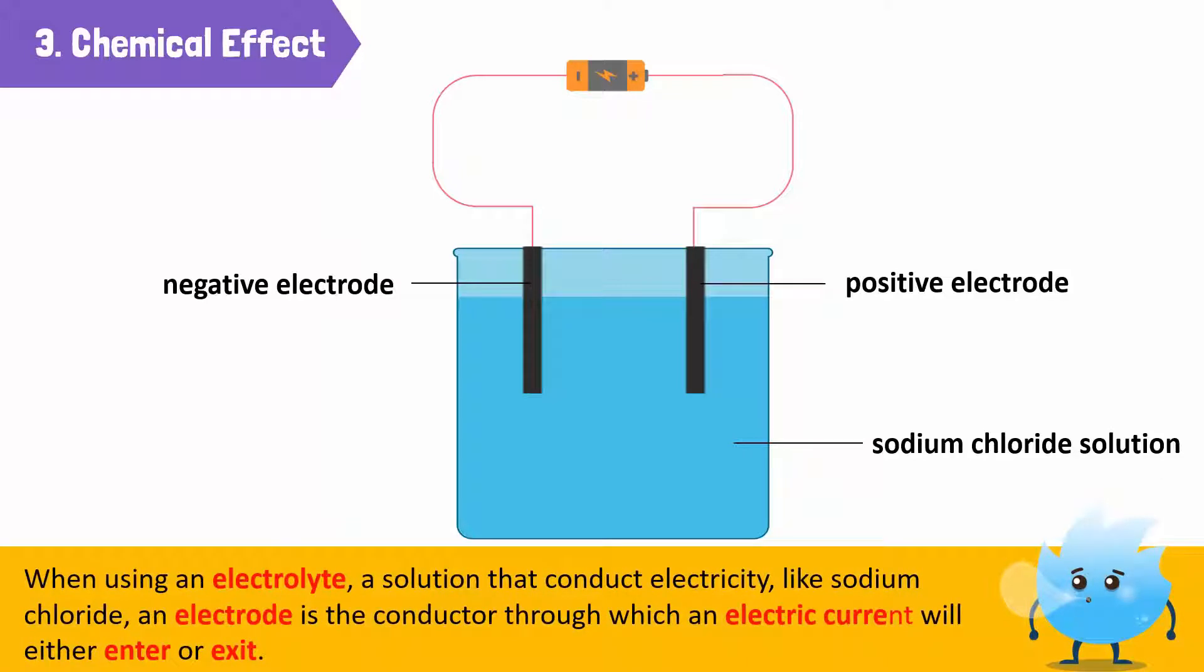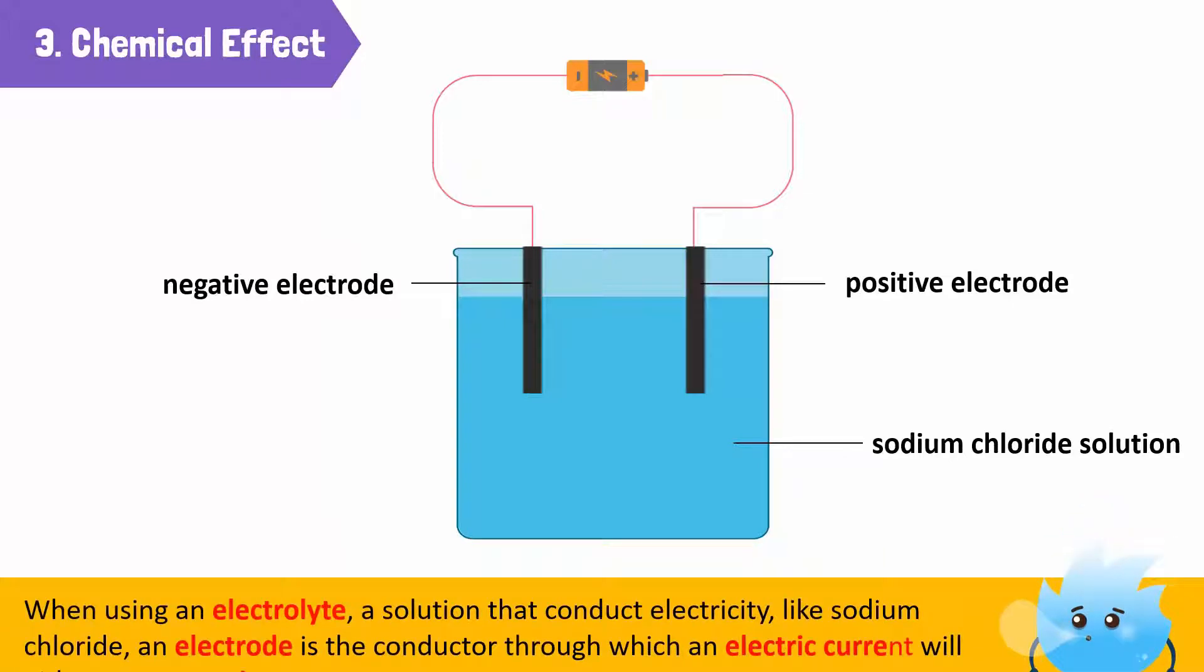And this is the positive electrode as it is connected to the positive terminal of the battery. When using an electrolyte, a solution that conducts electricity, like sodium chloride, an electrode is the conductor through which an electric current will either enter or exit.